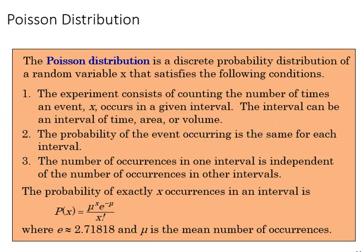That's the same condition we've seen in other distributions so far: uniform probability not changing. And three, the number of occurrences in one interval is independent of the number of occurrences in other intervals. That's how independence is expressed for a Poisson distribution.